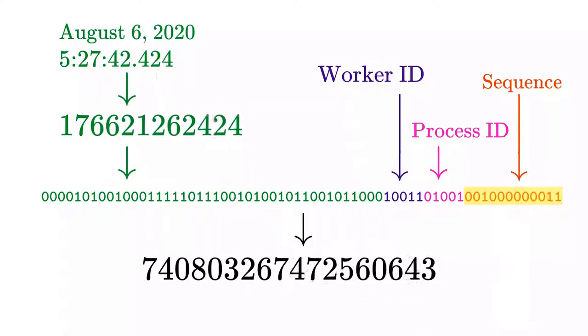Twitter's implementation differs in a few ways. Firstly, the leftmost bit is reserved, instead of being a part of the timestamp. Secondly, the process ID and the worker ID are combined into a single, 10-bit value.